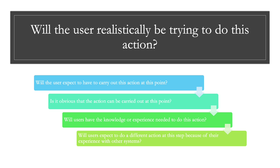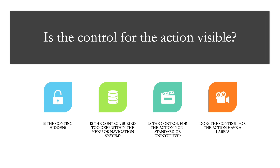Question two is: is the control for the action visible? This is also broken up into four sub-questions: Is the control hidden? Is the control buried too deep within the menu or navigation system? Is the control for the action non-standard or unintuitive? Does the control for the action have a label? Based on your answers to these questions, you'll be able to identify whether there's a usability issue. If the user shouldn't be trying to do this action at this point, or won't know what's coming, then there's probably a usability issue.